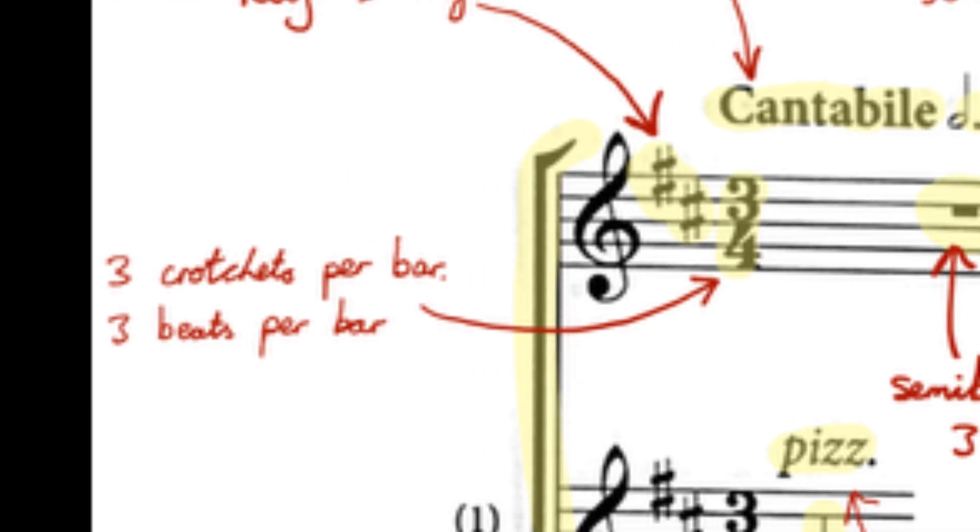On to signs and terms. This piece has a time signature of 3-4, which means that every bar has 3 quarter notes, or 3 crotchets of value, and that each crotchet is considered 1 beat.